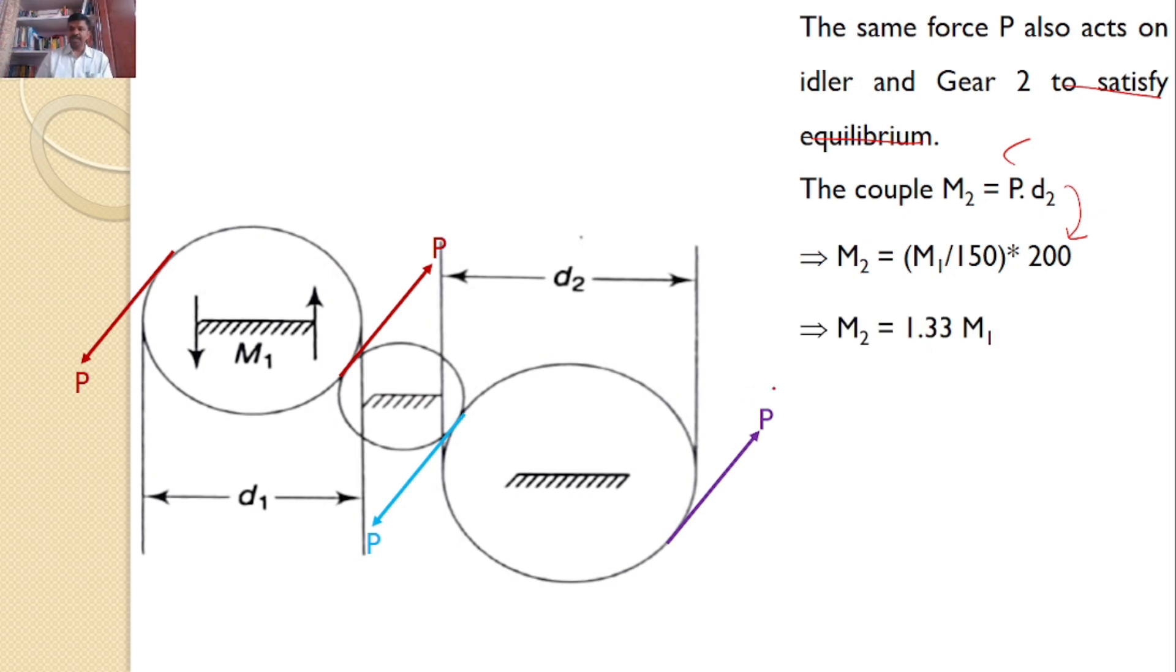Therefore, M₂ = 1.33M₁. However, our interest is to find the moment required for equilibrium.